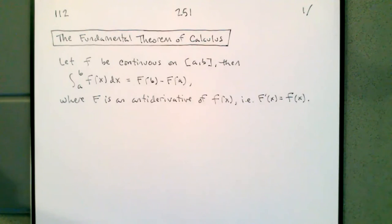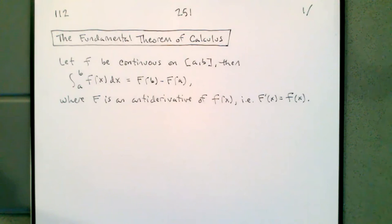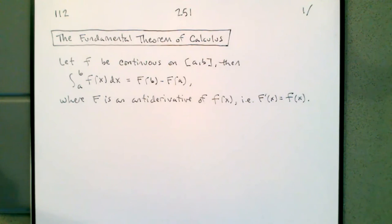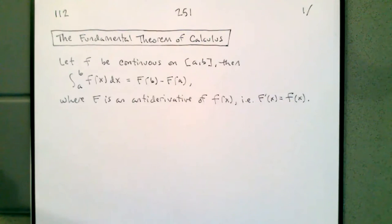Today we're going to continue our look at the fundamental theorem of calculus, which states the following. If we have a continuous function on a closed interval, then the definite integral from a to b of f of x dx is capital F at b minus capital F at a, where capital F is an antiderivative of f of x — that is, capital F prime is f of x.